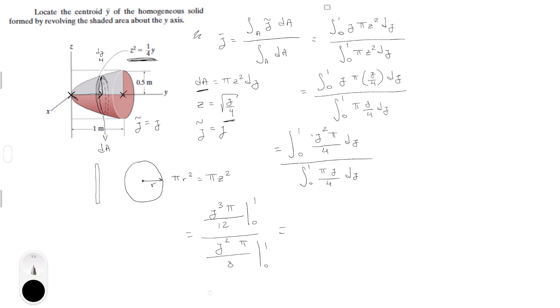You plug in 0 and they cancel out. You plug in 1 and you get pi over 12 over pi over 8, which is equal to, pi's cancel out, 8 over 12, which is equal to 0.667.